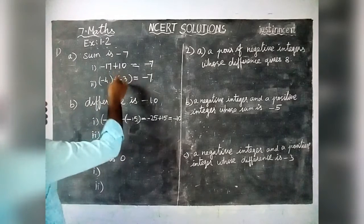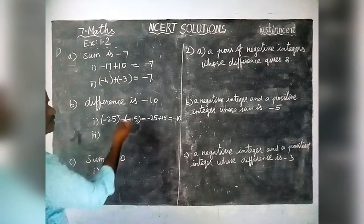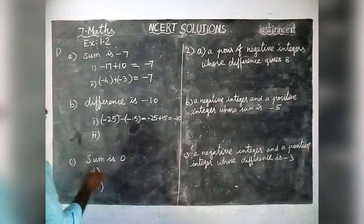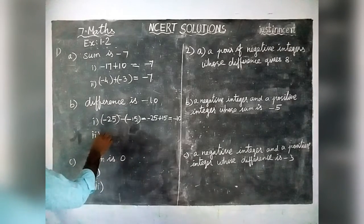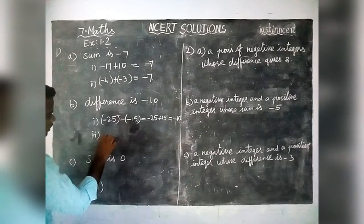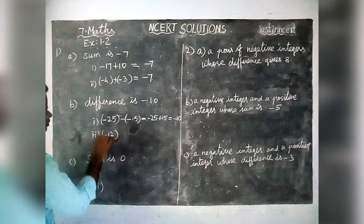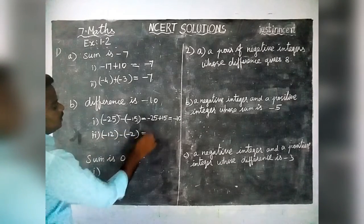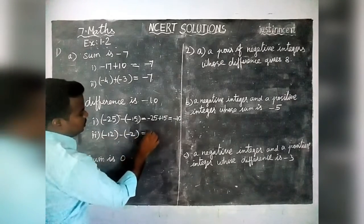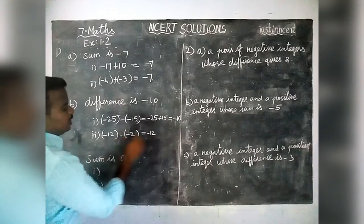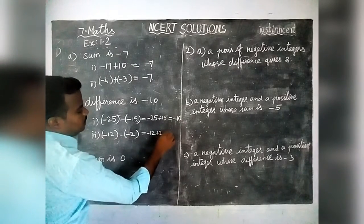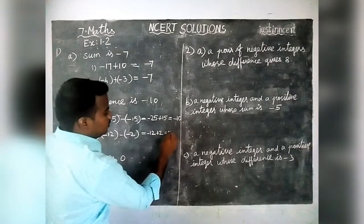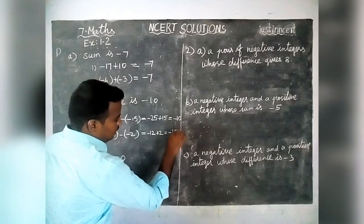These are only examples — we can write any numbers. The second example is: minus 12 minus (minus 2), which becomes minus 12 plus 2. The difference between these two gives minus 12 plus 2 is equal to minus 10. So we got the answer.